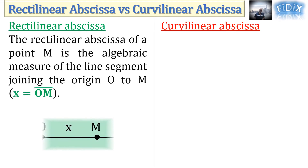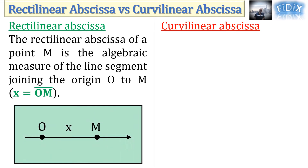The rectilinear abscissa X of a point M is the algebraic measure of the line segment joining the origin O to M. Note that the first part 'recti' of the word rectilinear comes from the Latin root rectus, which means straight. Therefore, rectilinear means in a straight line.